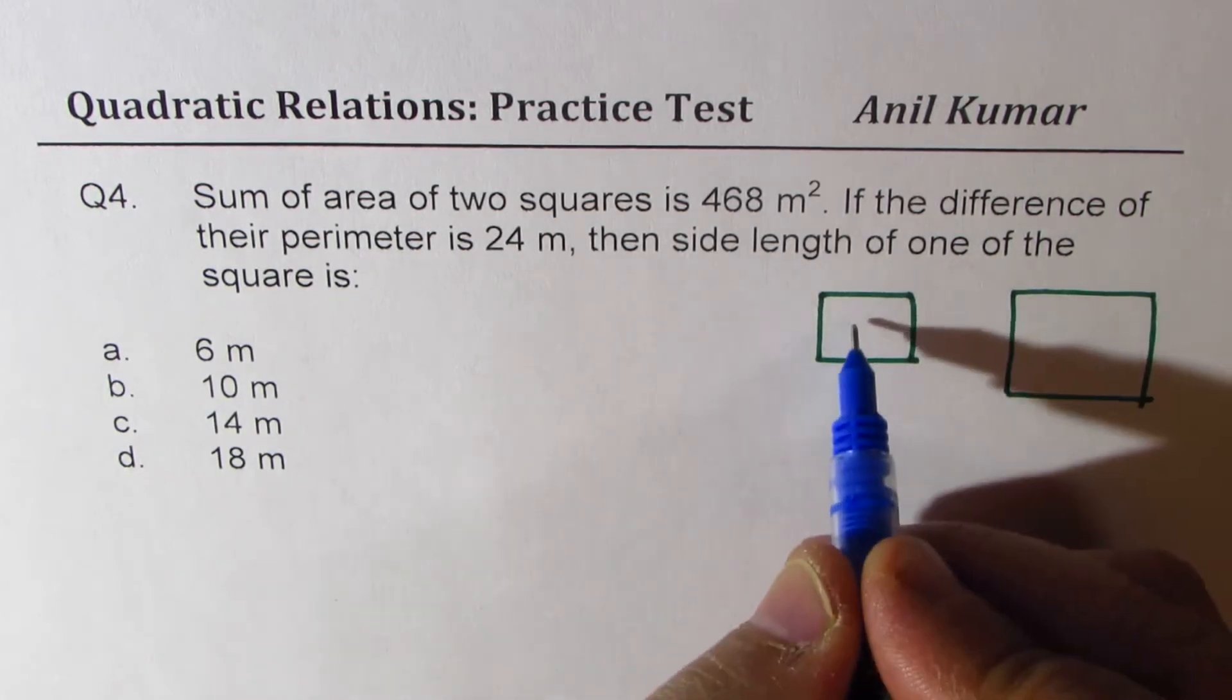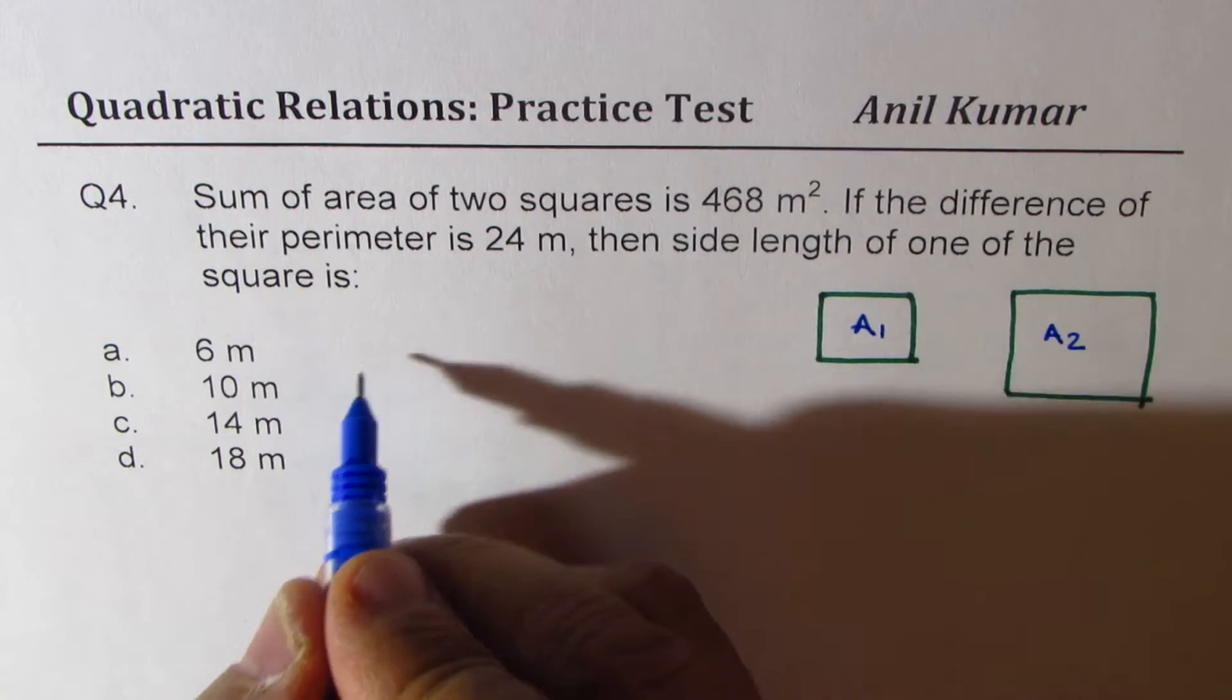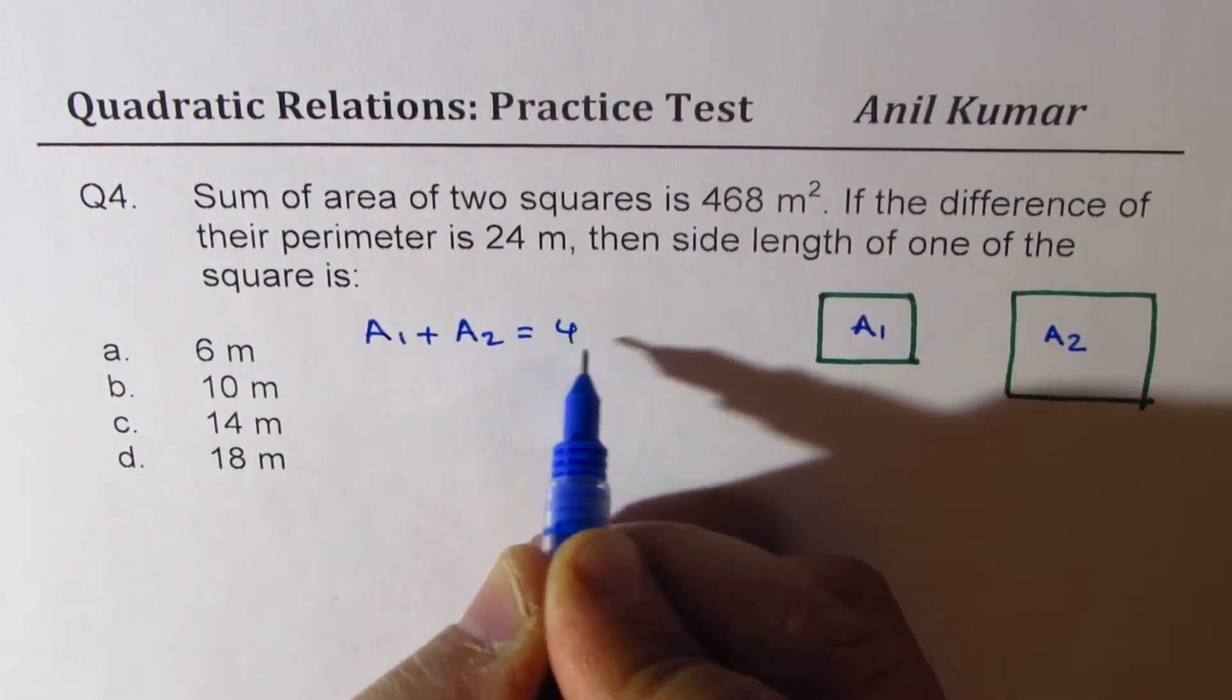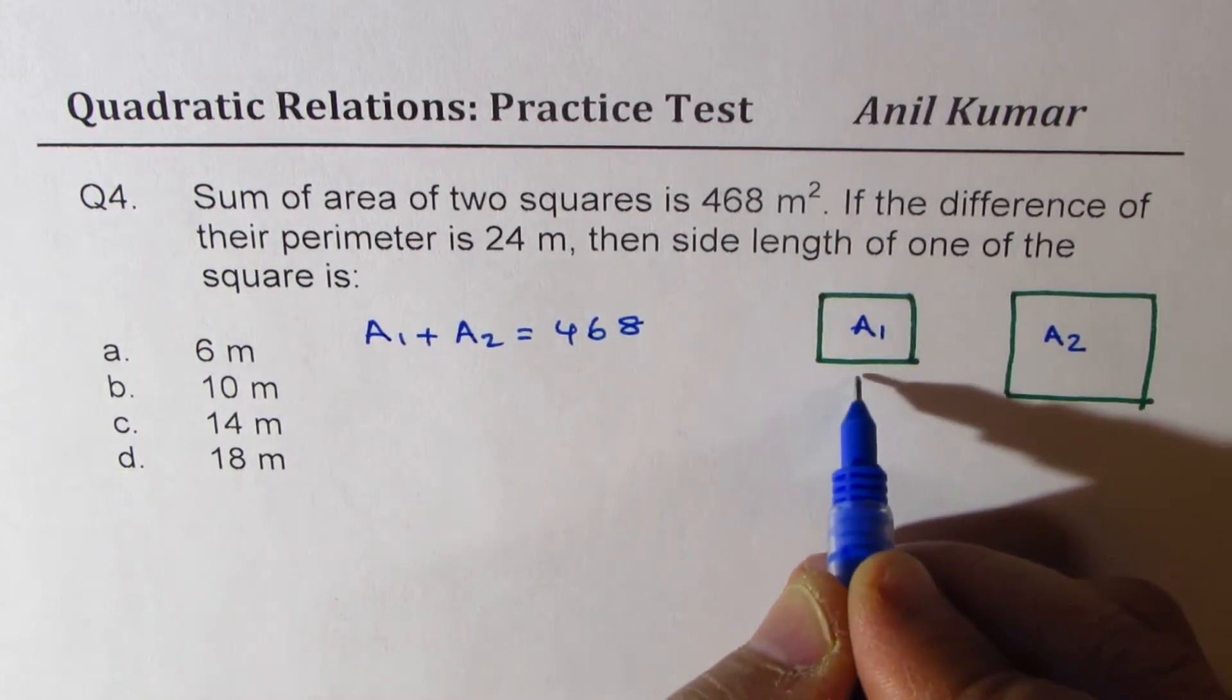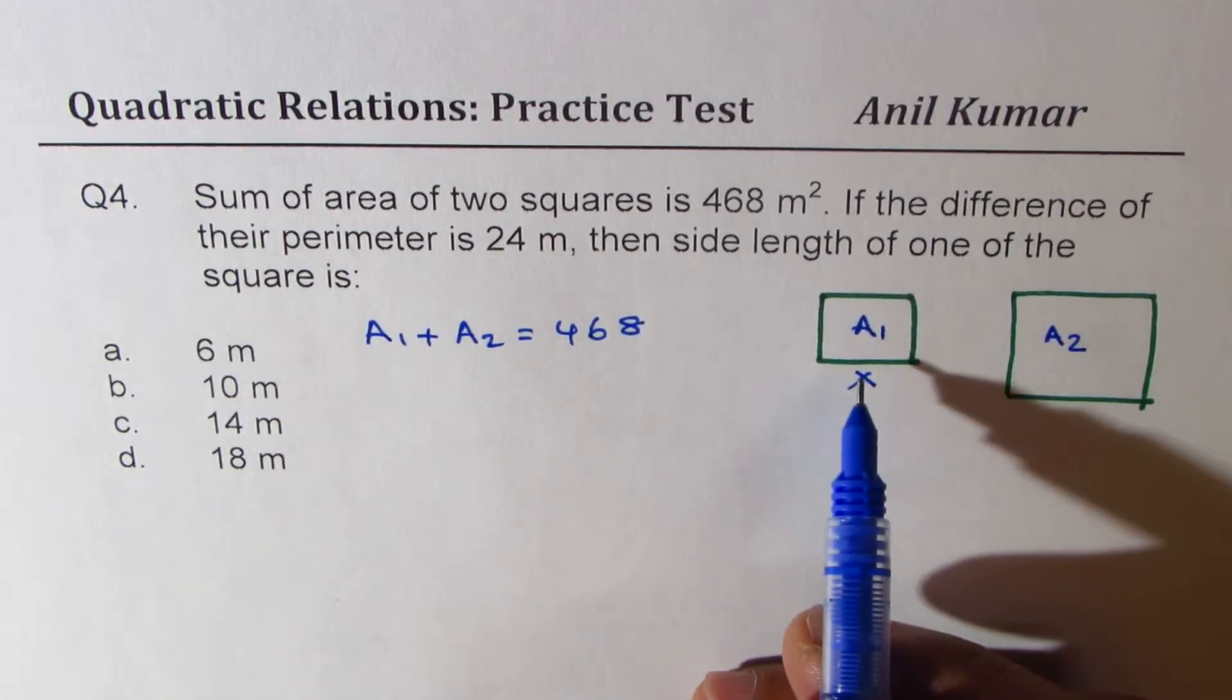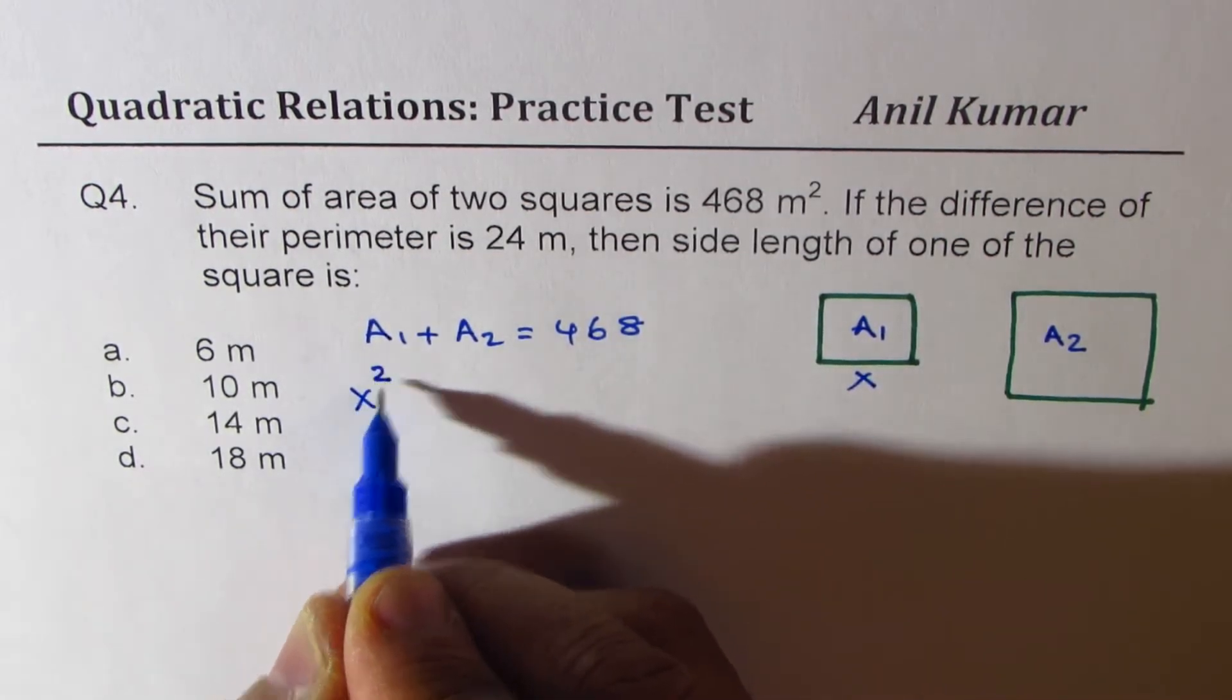Sum of their areas, which is let's say A1 and A2 is 468. So we know that A1 plus A2 equals to 468. If I choose x as the sides of A1, then the area is x square. So this area is x square.